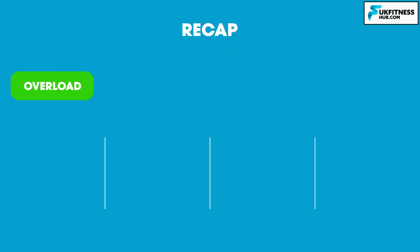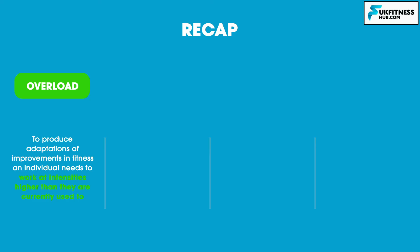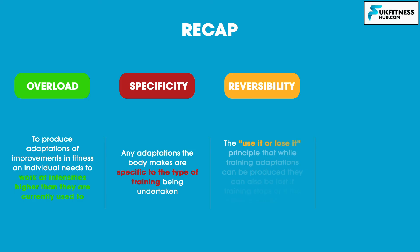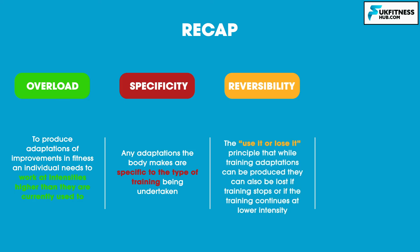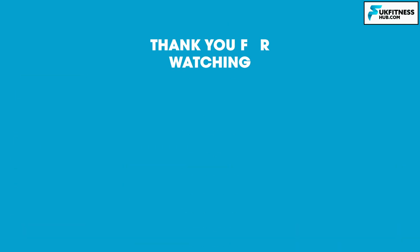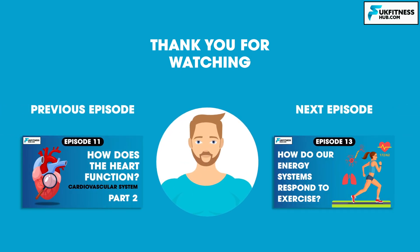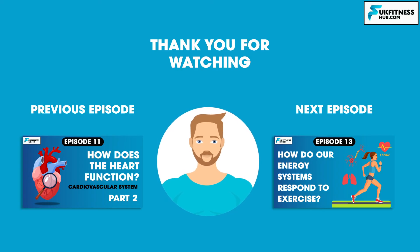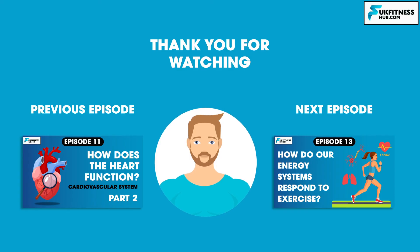Now let's recap on what we've learned. Overload refers to the principle that to produce adaptations or improvements in fitness, an individual needs to work at intensities higher than what they're currently used to. Specificity refers to the principle that any adaptations the body makes are specific to the type of training being undertaken. Reversibility is the use-it-or-lose-it principle — while training adaptations can be produced, they can also be lost if training stops or continues at a lower intensity. And finally, variety means varying training with different movements or methods still geared towards the client's needs and goals. That concludes episode 12 of my sports and exercise science series — you've been watching UK Fitness Hub, I've been Travis Tarrant, and I'll see you in the next episode where we begin study on the short-term responses to training.